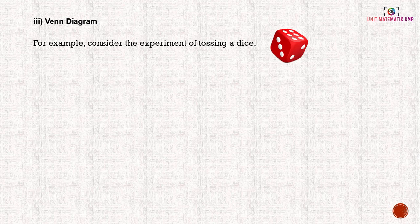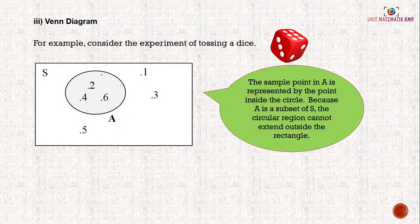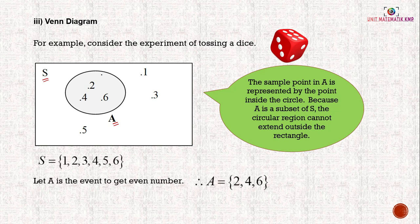Next, we look at the Venn diagram. Consider the experiment of tossing a die. S represents the sample space, and A is an event. The sample points in A — numbers 2, 4, 6 — are represented by points inside the circle, because A is a subset of S. The circular region cannot extend outside the rectangle. The sample space is {1, 2, 3, 4, 5, 6}, and letting A be the event to get even numbers, the sample space for A is {2, 4, 6}.